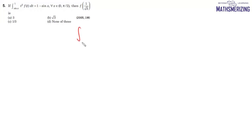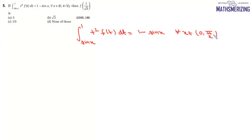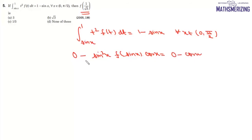Now we are given this equation: the integral from sin x to 1 of t² f(t) dt equals 1 − sin x, for all x belonging to 0 to π/2. We need to find the value of f(1/√3). We'll differentiate this function. Putting in the upper limit, the derivative of the upper limit is 0, so it will be 0 minus the lower limit term, giving −sin²x · f(sin x) · cos x = −cos x.